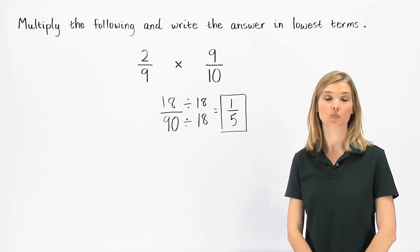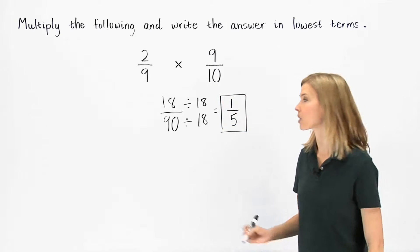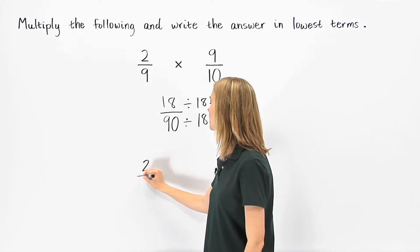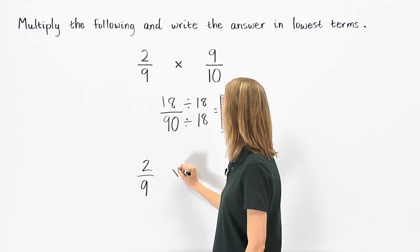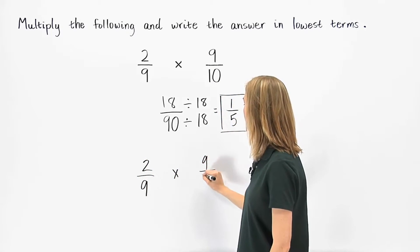There's an easier way to do this problem, however. Let's rewrite the problem: 2 ninths times 9 tenths.